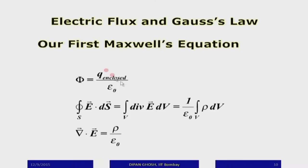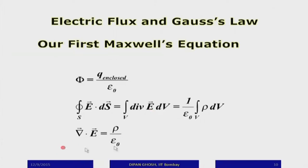The flux is defined as the surface integral of the electric field E dot ds, and by the divergence theorem this equals the volume integral of the divergence of E, which equals 1 over epsilon 0 times the integral of charge density rho over the volume. Comparing these two expressions, since this is valid for any volume, we equate the integrands: divergence of E, written as del dot E, equals rho divided by epsilon 0. This is the first of Maxwell's equations in differential form.